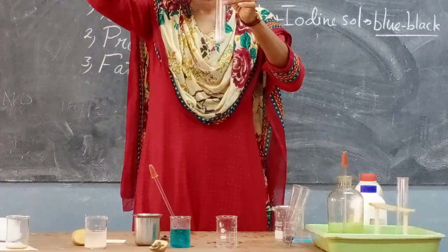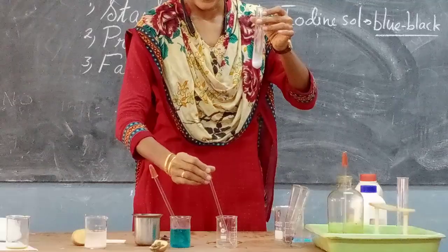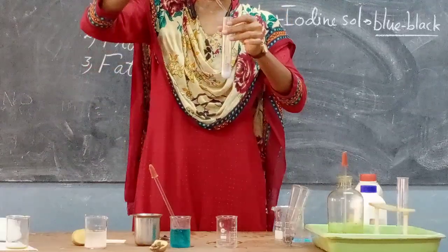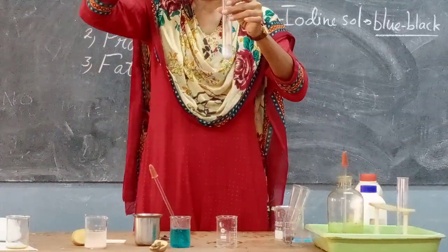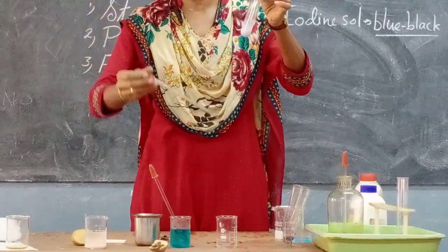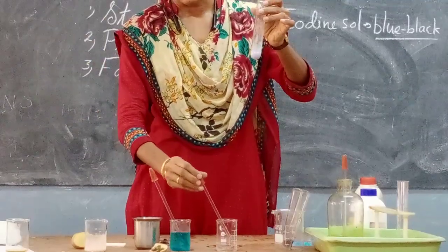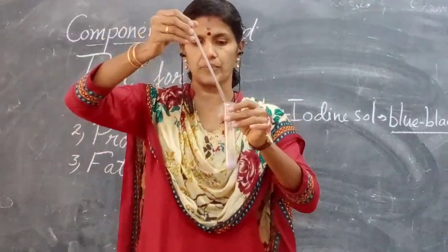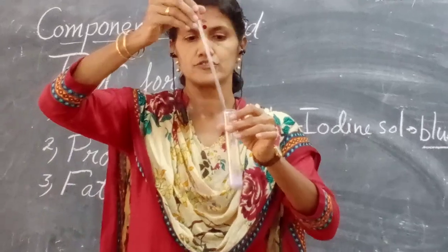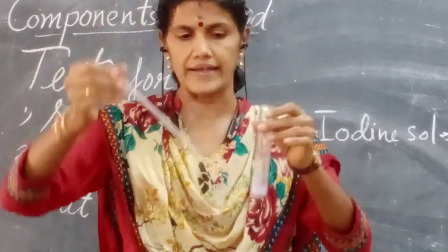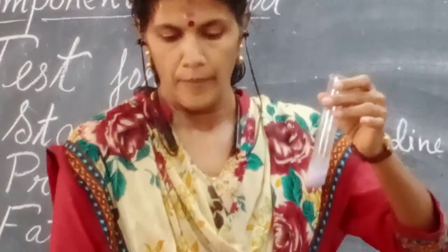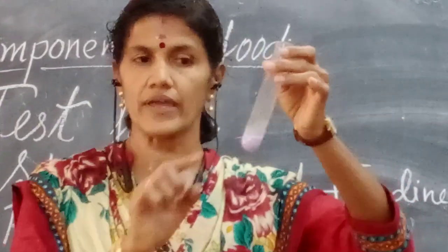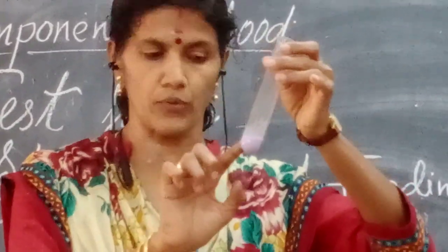See that — we can see the change in it. It completely became violetish color, and when it becomes violetish color, it proves that it contains protein. So milk contains protein. That's why milk is also known as a balanced diet.